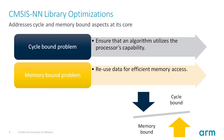The first part is to ensure that the algorithm uses the processor's capability to its maximum. In its simplest form, this could be writing non-complex C code. At the other end, it could be using intrinsics or assembly instructions for cases where the compiler is unable to utilize the processor's capability.